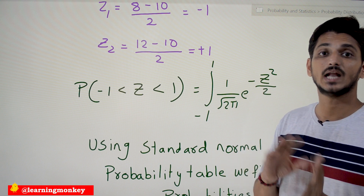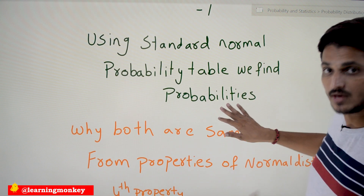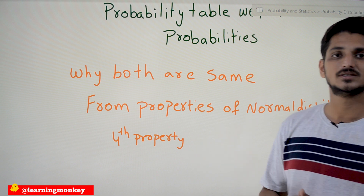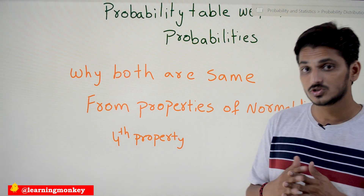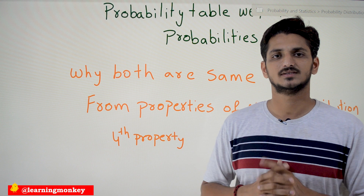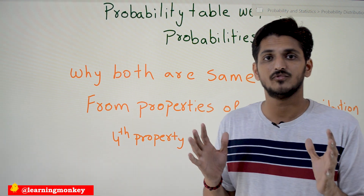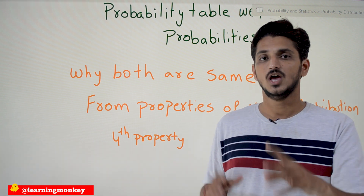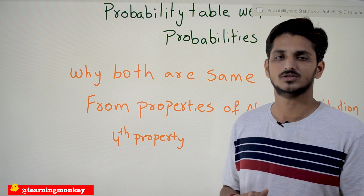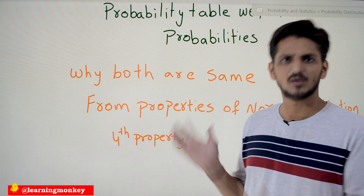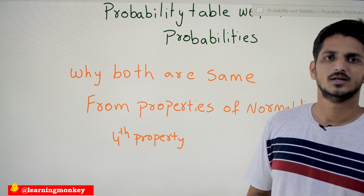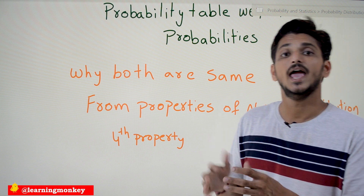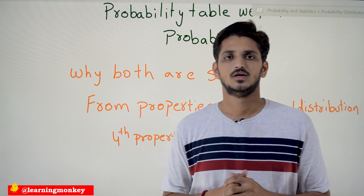Why are both the same? This is the point we discussed in the properties — the fourth property: normal distributions may be of any shape and size, but their probability values are the same. We showed this graphically by taking two normal distributions. That also applies to the standard normal distribution, and that is why we can use the standardizing technique to find probabilities for any normal distribution.